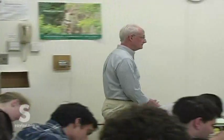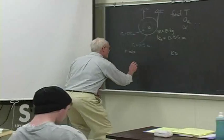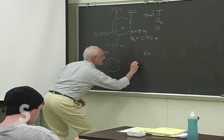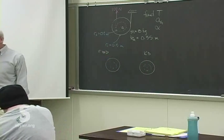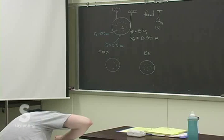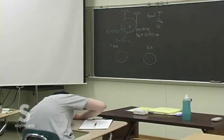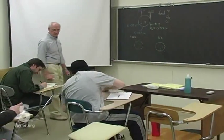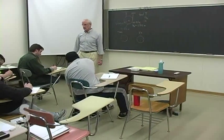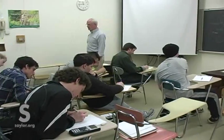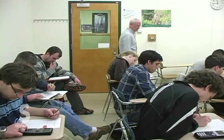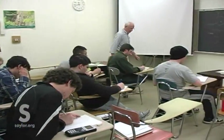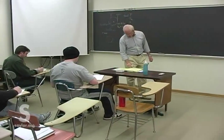Start with a free body diagram and a kinetic diagram. You can put them on the same diagram, but be very careful about using different types of arrows for completely different things. Don't use similar-looking arrows for different quantities.